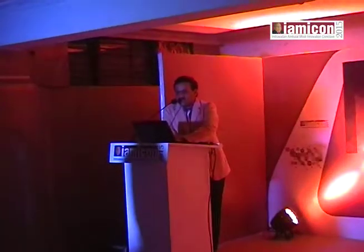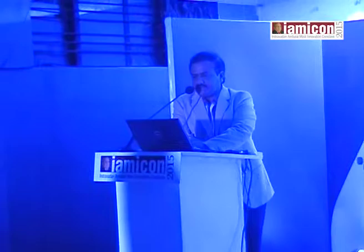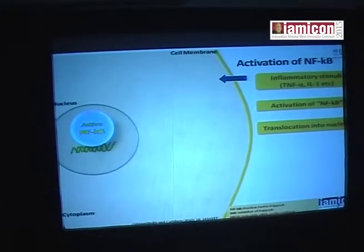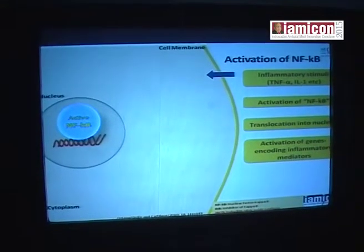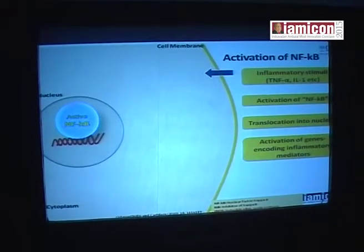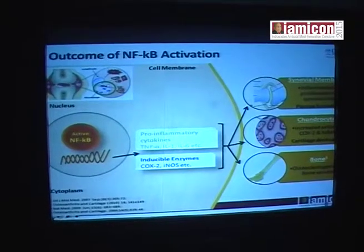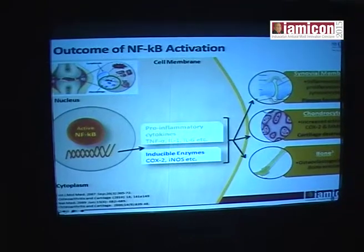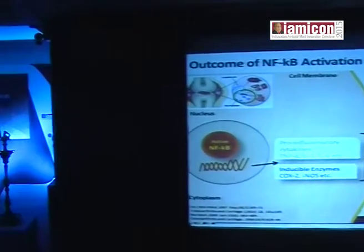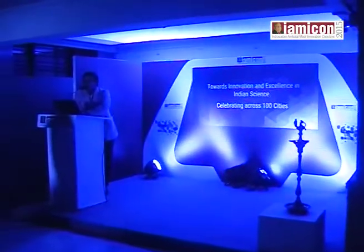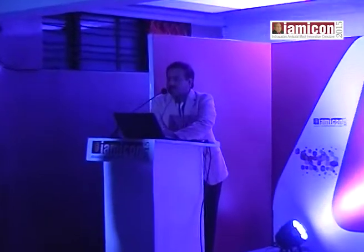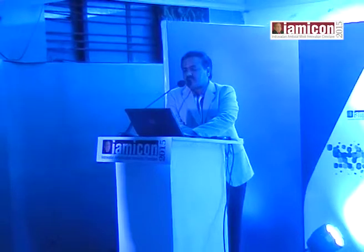This is the activation of NF-κB — how it acts and produces cytokines. There is translocation into the nucleus, activation of genes encoding inflammatory mediators, and release of inflammatory mediators. The total outcome of NF-κB activation is synovial membrane inflammation and proliferation of synoviocyte sites, pannus formation, increased activity of COX-2 and MMPs leading to destruction of cartilage, and osteoclastogenesis with bone erosions.